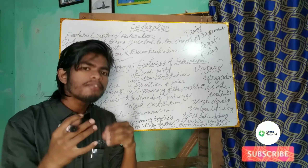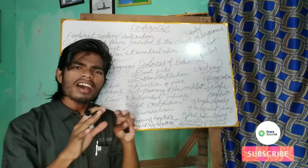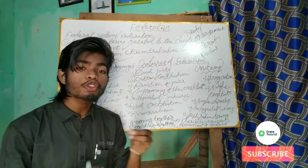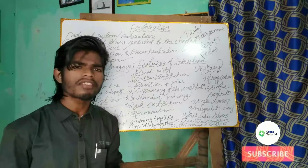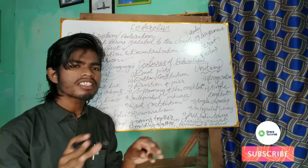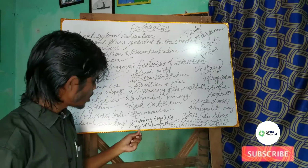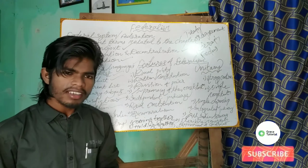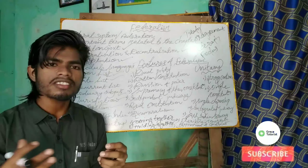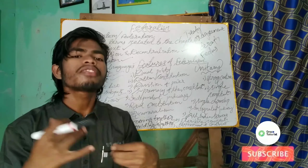India has adapted a federal system of government mainly for two reasons. Number one: due to its vast size of the country, and number two: due to its social and cultural diversity. If someone asks why India adapted a federal system, these two reasons clearly explain it. Now let us discuss the different features of federalism one by one.